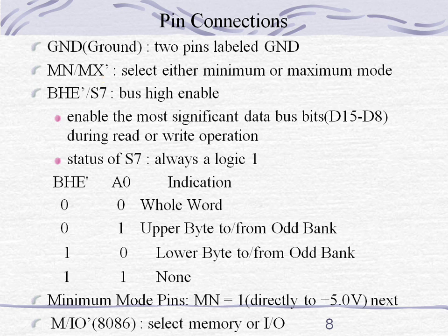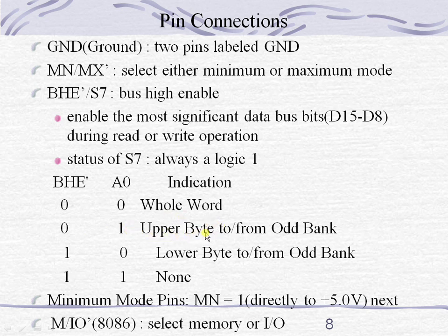BHE bar stands for bus high enable. This signal is used along with the A0 pin. These two pins represent what type of data the processor is currently accessing. If BHE bar and A0 are 00, the processor is accessing a full word — 16-bit data. If it is 01, it is accessing only the upper byte from the odd bank. 10 indicates the lower byte from the even bank. 11 means no data is being accessed from either bank — the data lines are not carrying data information.